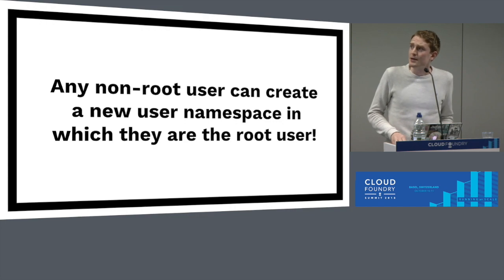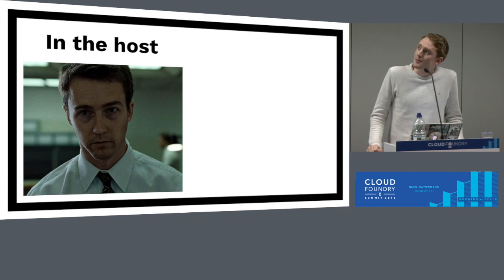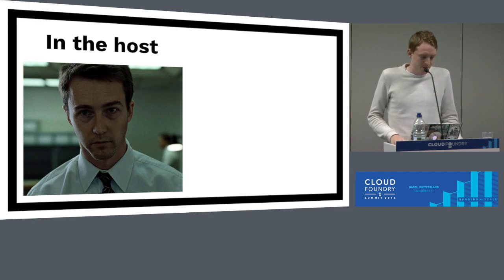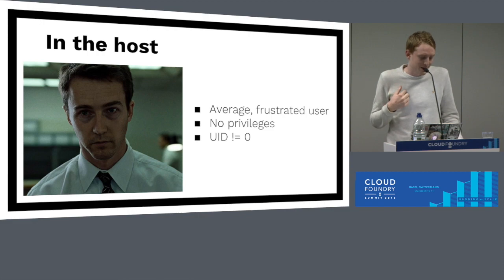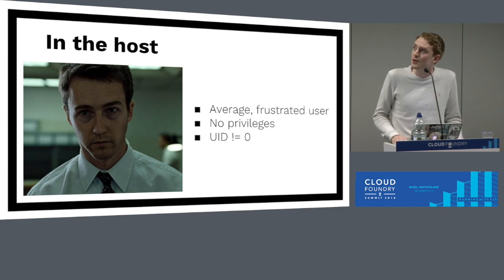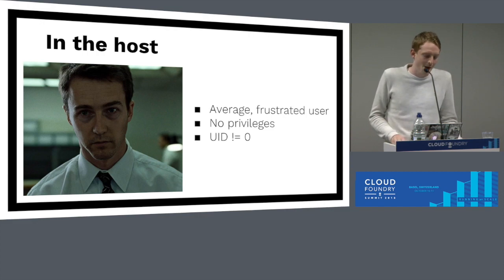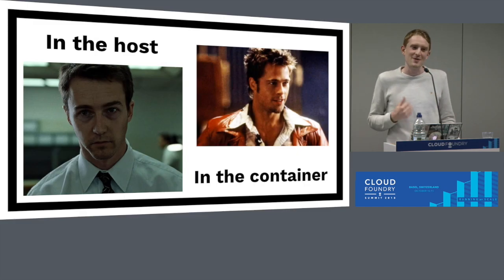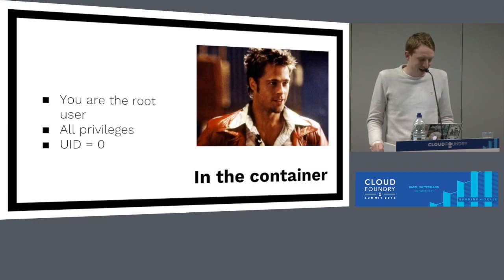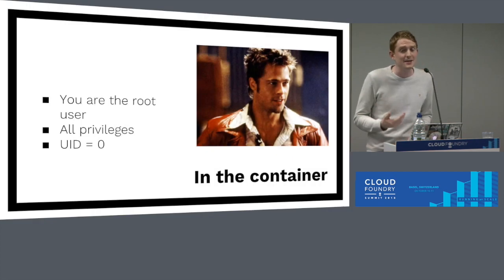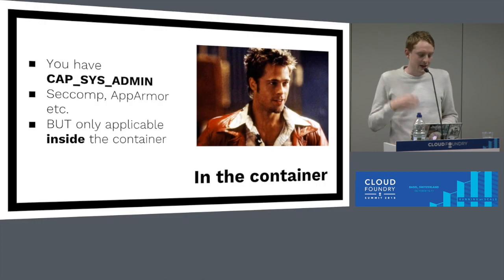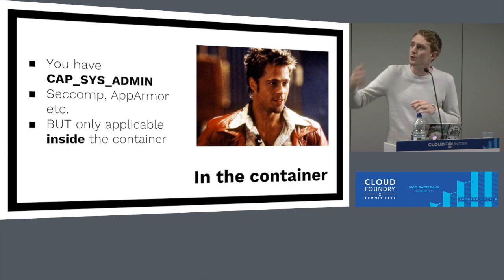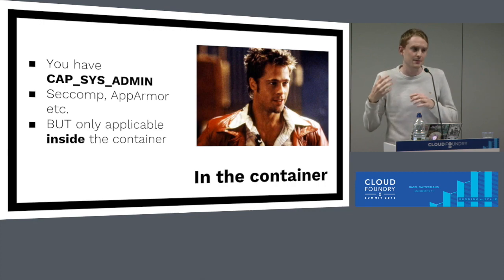The key point of this whole talk: any non-root user can create a new user namespace in which they are the root user. And once you are the root user within that user namespace, you have cap_sys_admin — you have the privileges you need to go and set up the rest of the container. Here's an analogy: in the host, we are an average, frustrated user with no privileges — our UID does not equal zero. But in the container, we're Brad Pitt — we are the root user, we have all privileges, our UID is zero. This means we've got cap_sys_admin. We can go and set up the rest of the container with all those layers of security — exactly the same as before. But those root-level privileges are only applicable inside that user namespace. Outside the user namespace — in the host and in other containers — you're just an unprivileged user.